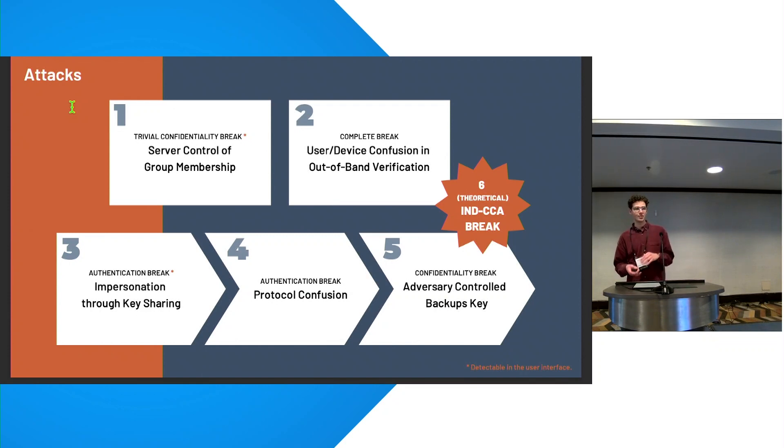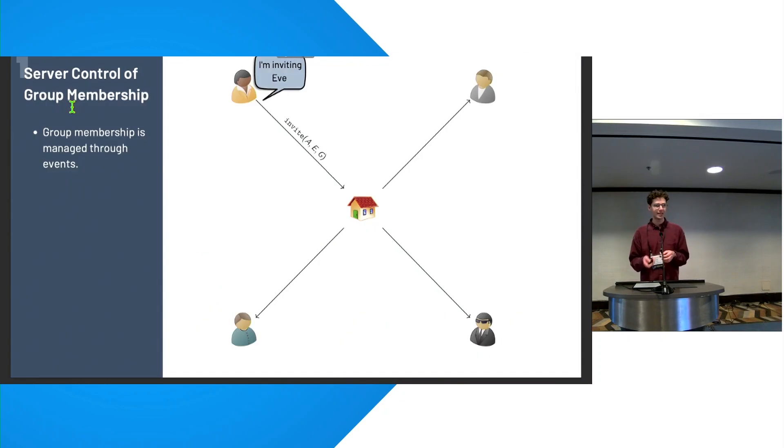We're going to go through our attacks. So we found six attacks in total. Five of them were practically exploitable. And we implemented proof of concepts for attacks two through five. Our proof of concepts all were developed against Element and the reference libraries that the Matrix foundation provides. And in doing so, we do utilize quite a few implementation specific bugs. So let's take a look at them now.